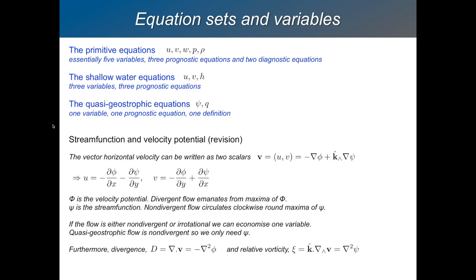A quick recap on what the stream function means. Instead of talking about the two wind or current components, you can express the horizontal velocity as a gradient of something plus the vertical unit vector cross-product with a gradient of something else. This is the stream function psi and the velocity potential phi. We've thrown out u and v but kept all the information in these two variables. We can write: u = −dφ/dx − dψ/dy, and v = −dφ/dy + dψ/dx.